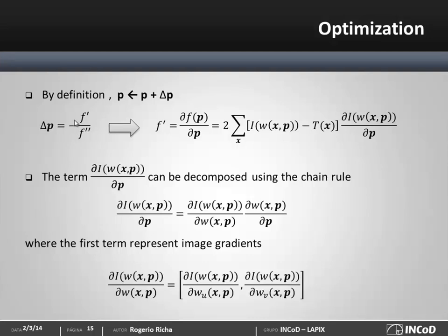Computing the gradient of f is very straightforward. We use the chain rule: we first derive the exponent, so we have two times the intensity difference times the derivative of the intensity difference with respect to p, which is the derivative of the back-warped image with respect to p.